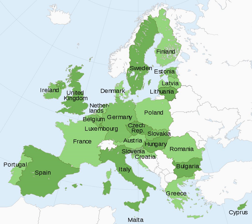EU integration is not always symmetrical, with some states proceeding with integration ahead of holdouts. This comes in two forms: a faster integrated core where some states forge ahead with a new project, and opt-outs where a few states are excused from normal integration. The notion of multi-speed integration is anathema to some, including President Juncker, who see it as divisive to the European project, and others such as the less integrated states who feel they would be left behind. It is however supported by others, such as President Macron, to move forward in integration faster.